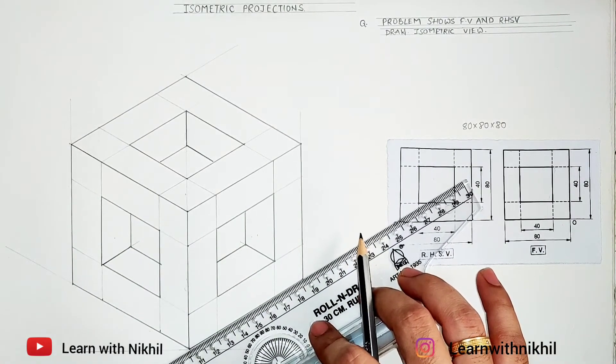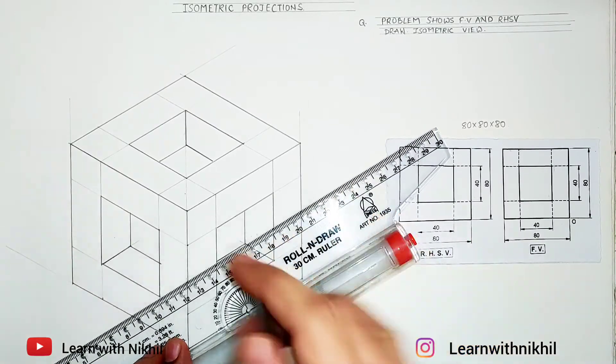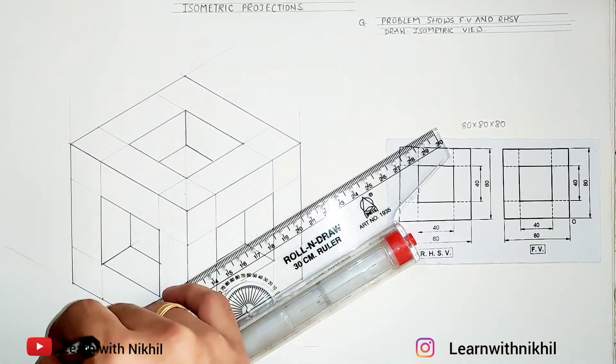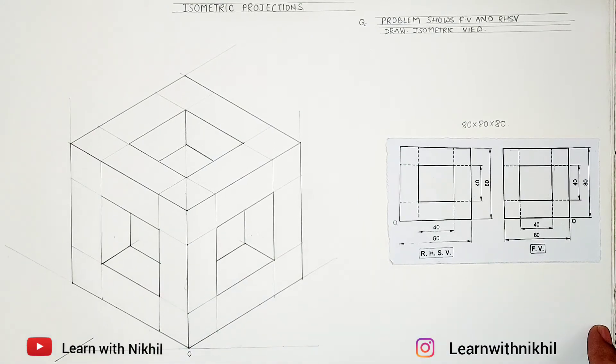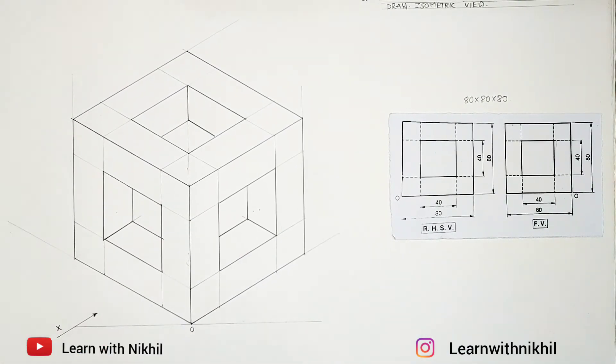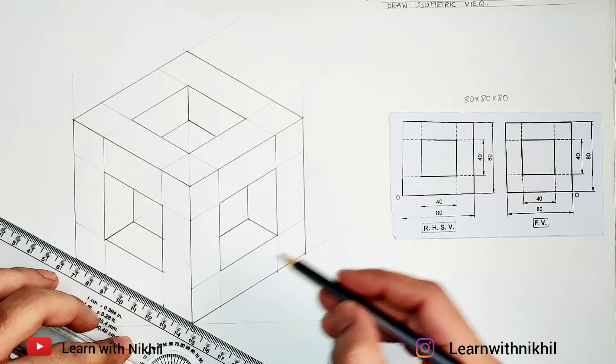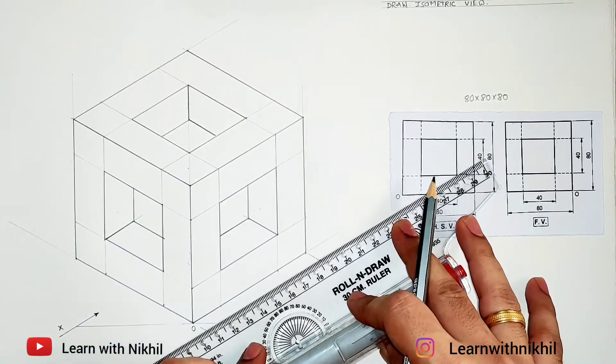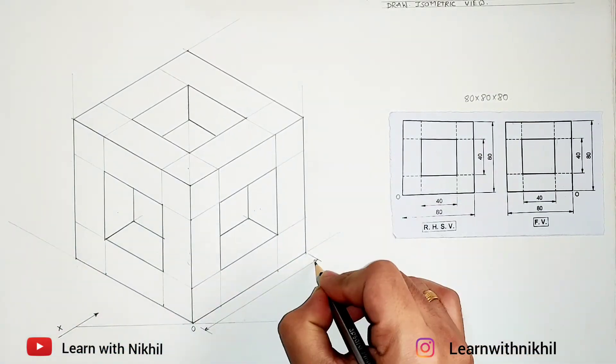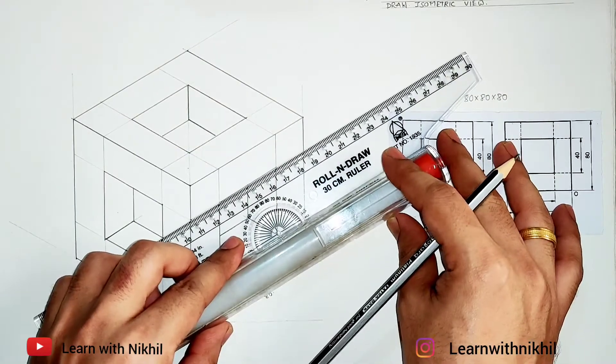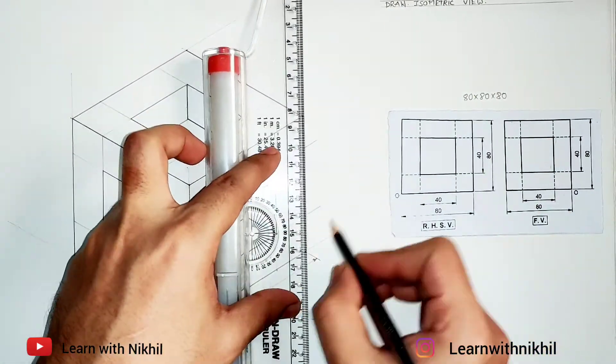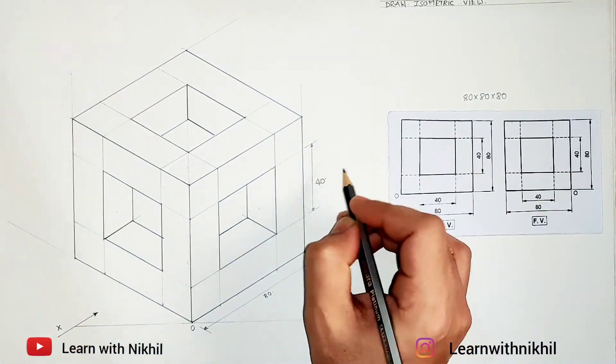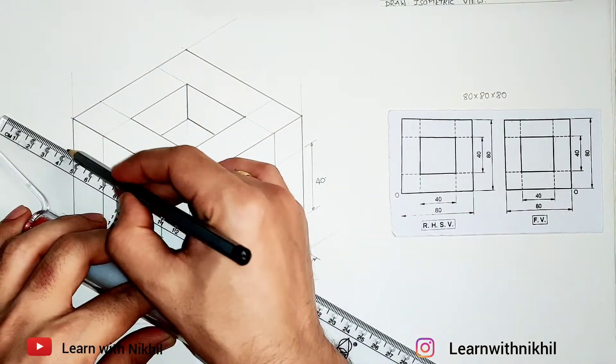Now we'll mark the arrow X, which shows the direction of front view. Marking of the dimensions—dimensions also carry marks, so don't forget. Whatever dimensions are given in the question, just mark it on your three-dimensional figure as well.